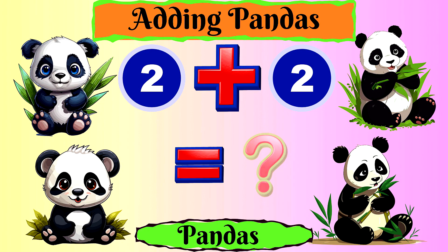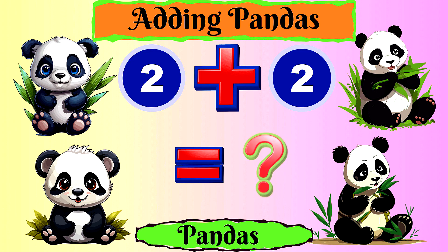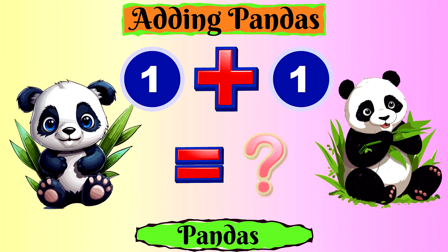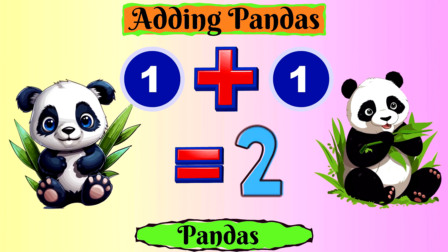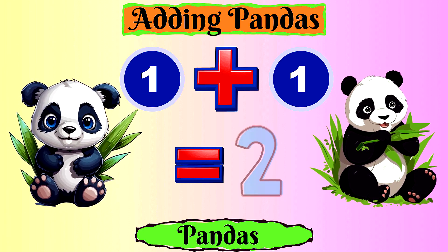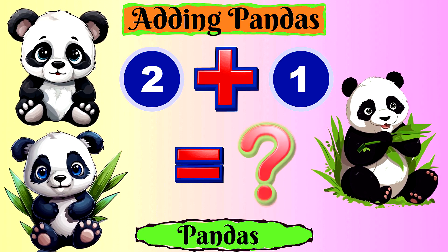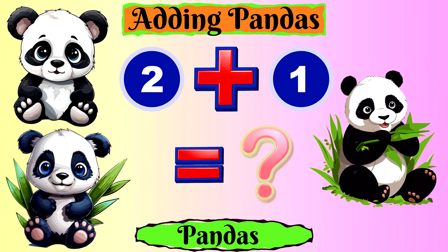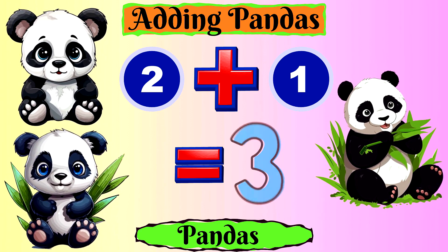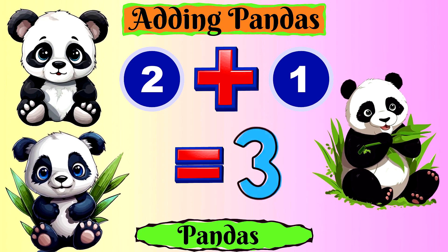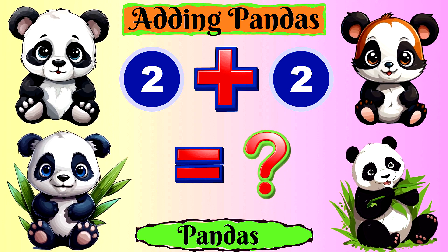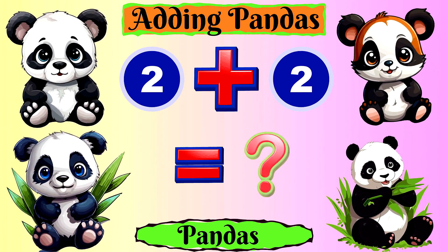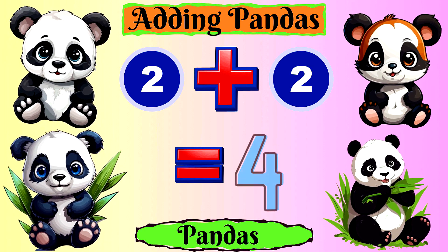Let's add these adorable pandas. One panda plus one panda equals two pandas. Two pandas plus one panda equals three pandas. Two pandas plus two pandas equals four pandas.